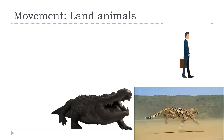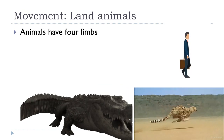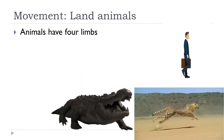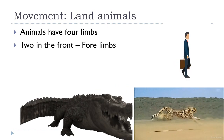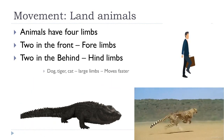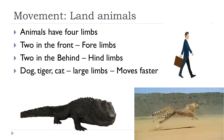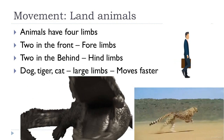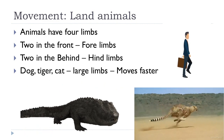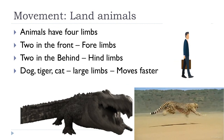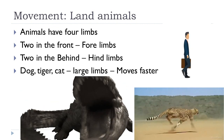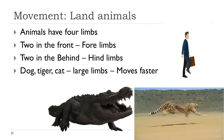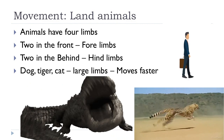Most land animals have four limbs — two in the front called forelimbs and two behind called hind limbs. Animals such as dogs, tigers, and cats move on all four limbs and have strong limbs that help them move fast. Reptiles such as lizards, crocodiles, and turtles have short limbs. Human beings use their hind limbs — that is, legs — to stand and walk.